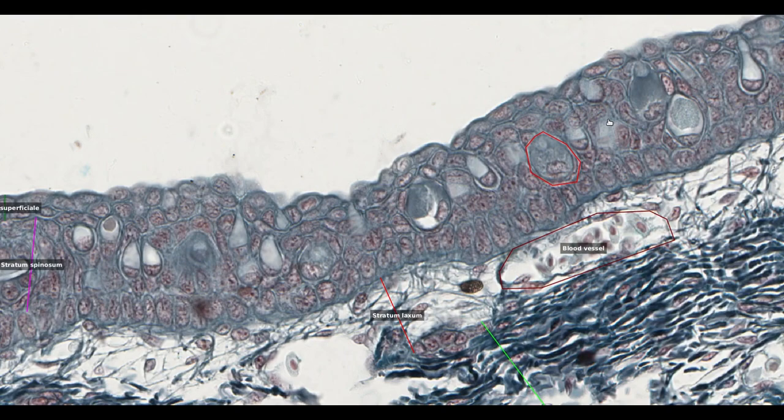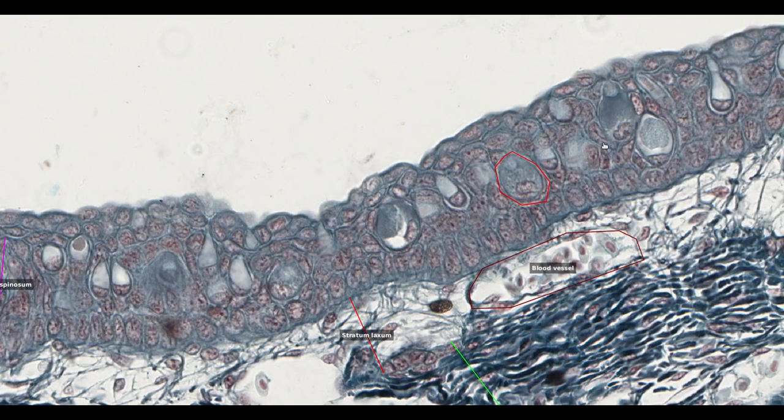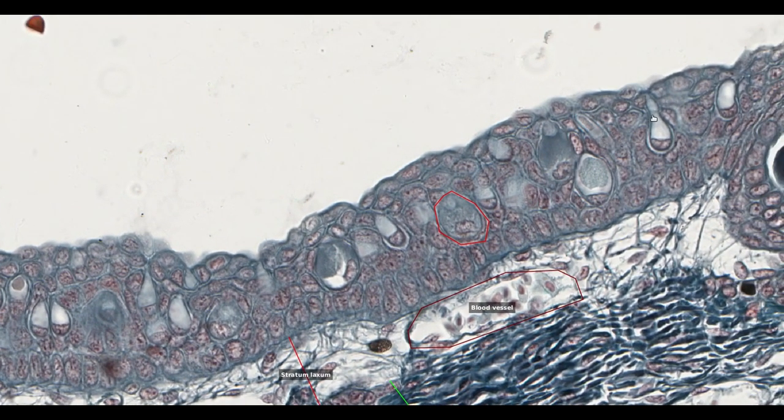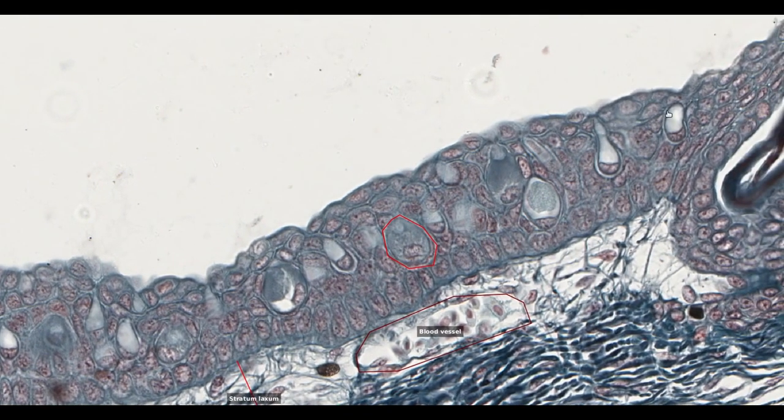In one paper I found reference to specialized holocrine cells. Holocrine cells are secretory cells which release their contents by rupturing their cell membranes, destroying themselves in the process. An example in mammals is the sebaceous glands. It's possible that these larger cells with foamy cytoplasm are holocrine cells. Wherever they come from, the secretions covering the shark skin will help to defend against bacterial and parasitic infection.